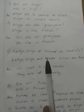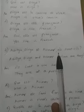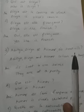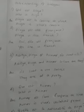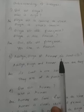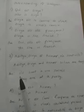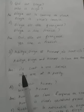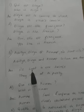Third question: 'Où sont Aditya, Divya et Kumar?' — 'Où' is an interrogative adverb meaning 'where'. 'Ils sont' is the third person plural conjugation of 'être', meaning 'they are'. So the question is: where are they? In this dialogue, they are at an evening party — they are at a party.